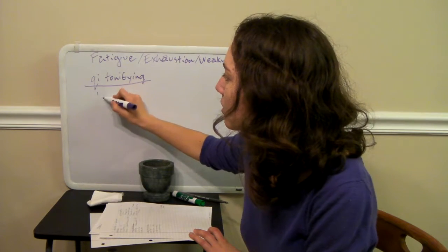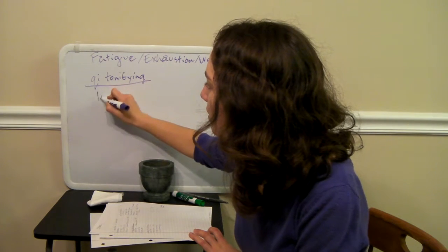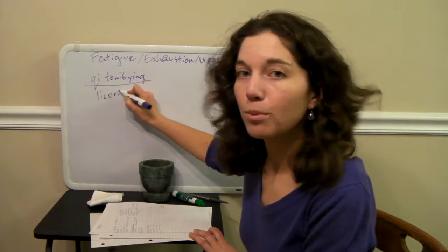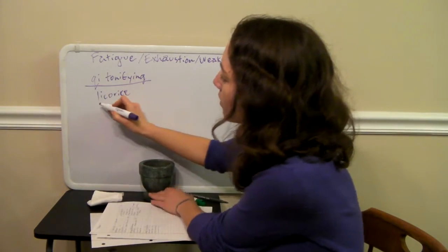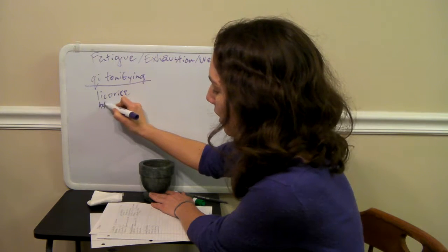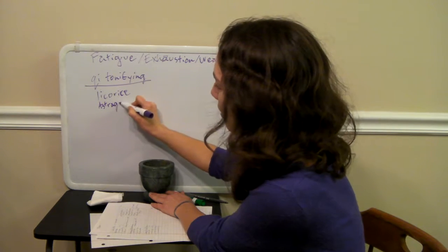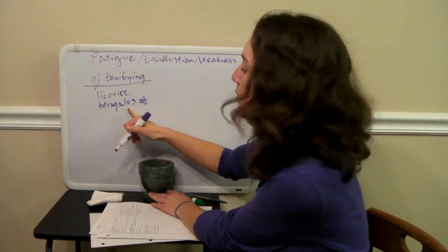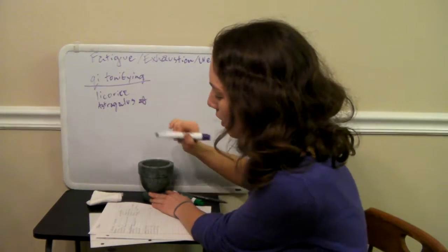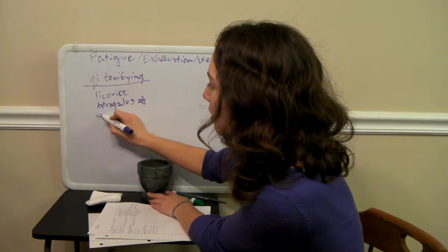So again, you can use the licorice for this. This is really nice. So you can kill two birds with one stone here. So if you include the licorice, then you've got two categories. I highly recommend astragalus. This is a really nice herb for qi tonification.